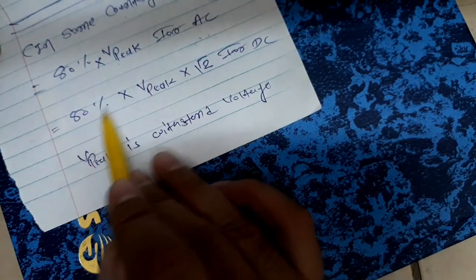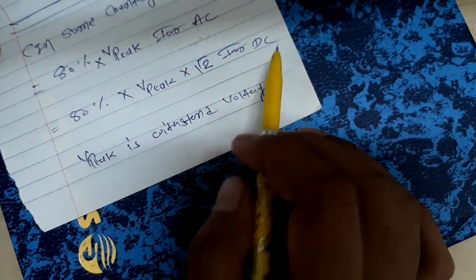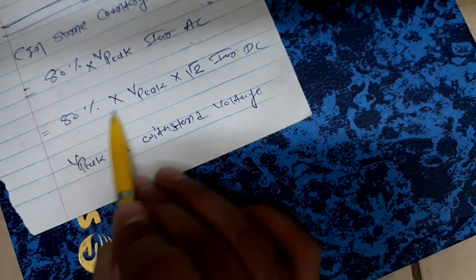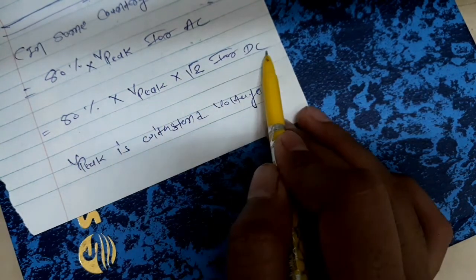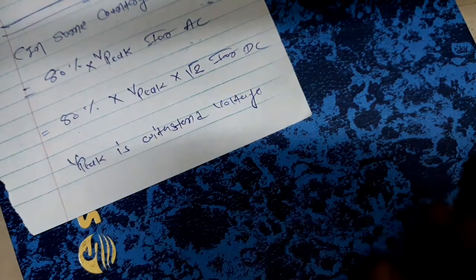For DC, another formula is 80% × Vpeak × √2. Vpeak is the withstand voltage for the system.